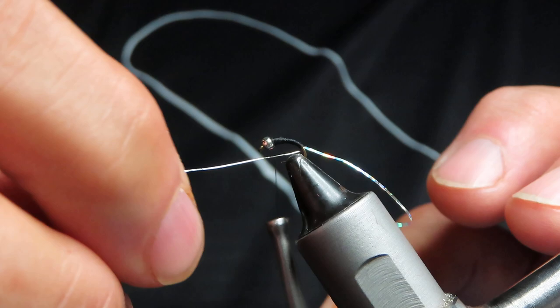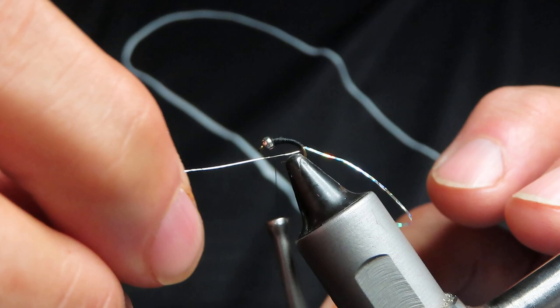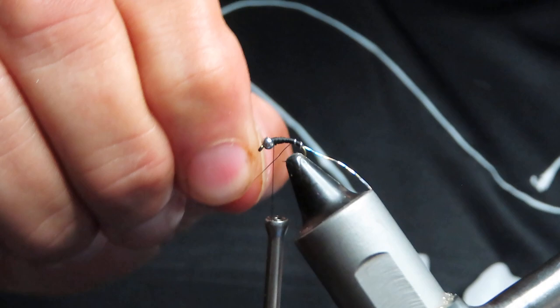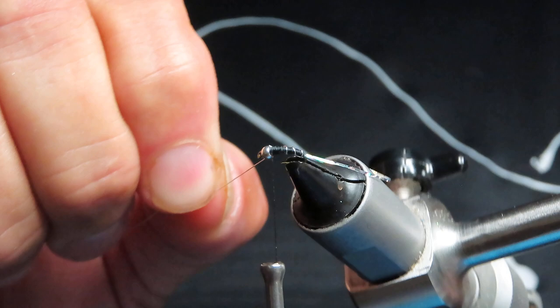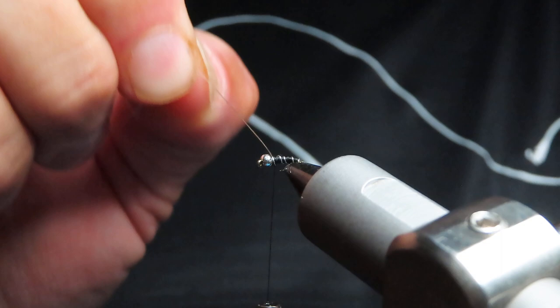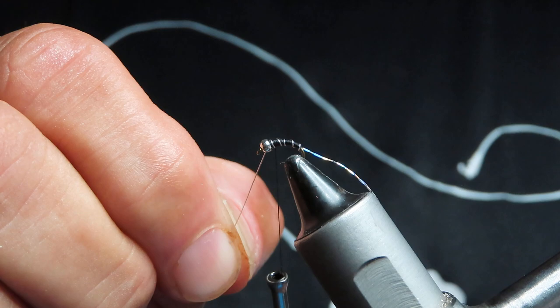At this point, just going to take my wire. I'm going to counter wrap here. If you have a rotary vise, you can use the feature there and use the rotary to go ahead and segment your body there. I usually just go by hand. There's some instances where that feature in your vise does come in handy.